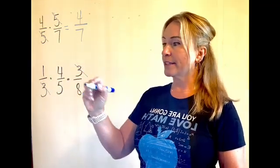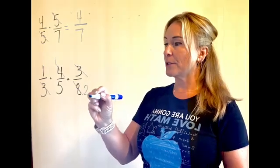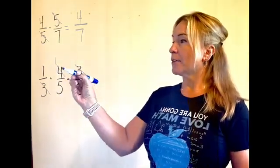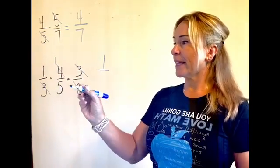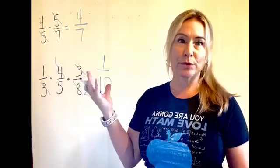And then 4 and 8, look at that. This guy cancels to a 1. This one cancels to a 2. We just reduced it. Cut them both in half. Look all the way across. I've got a 1 left over. And then I have a 5 times 2, which is 10. Simple as that.